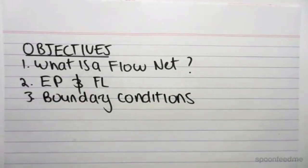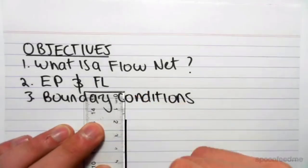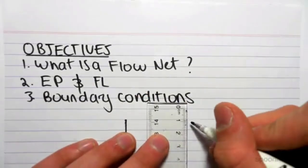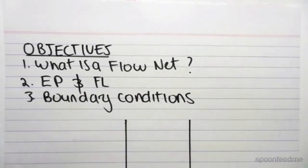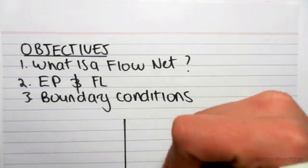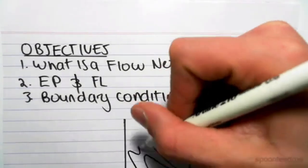So the first thing we need to do is have a look at what a flow net is. A flow net models the flow of water through a soil sample. So let's say we have a tube like this which is filled with soil.